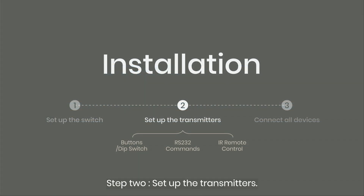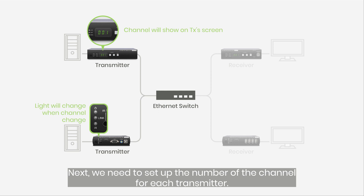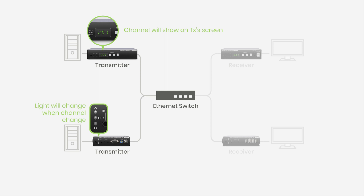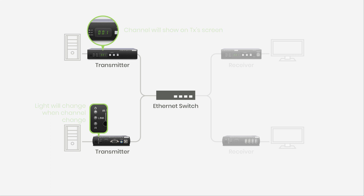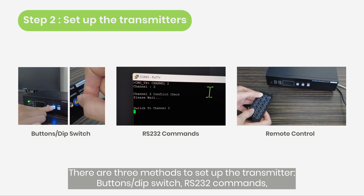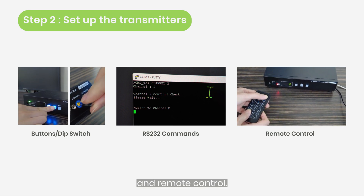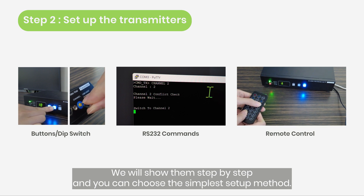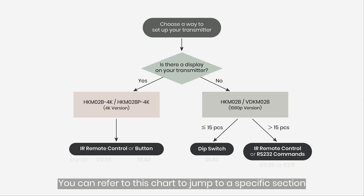Step 2: Set up the transmitters. Next, we need to set up the channel number for each transmitter. Each transmitter needs a unique channel corresponding to a specific audio-visual source. There are three methods to set up the transmitter: button/dip switch, RS-232 commands, and remote control. We will show them step by step, and you can choose the simplest setup method. You can refer to this chart to jump to a specific section.